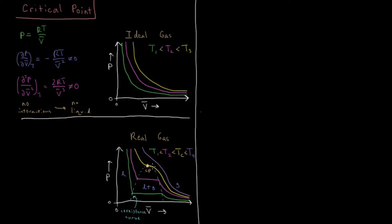At this critical temperature, you create a situation where you have what's called a supercritical fluid — it's really neither liquid nor gas. It blurs the distinction between liquid and gas and has properties of both in a sense. This occurs at the critical point, at which we have a critical pressure, a critical volume, and a critical temperature.